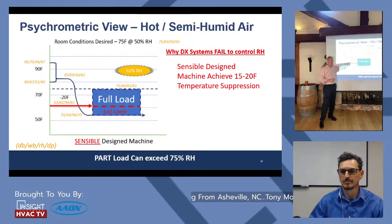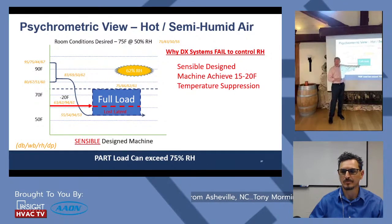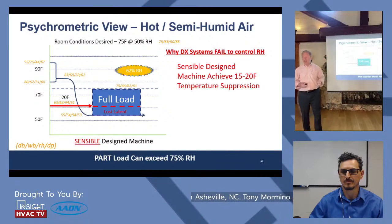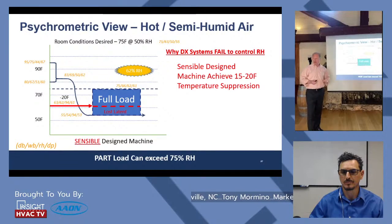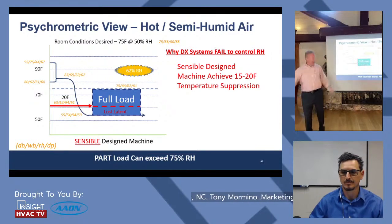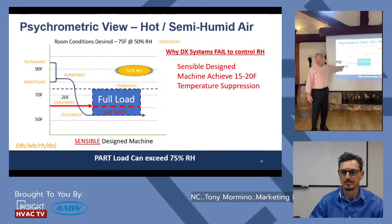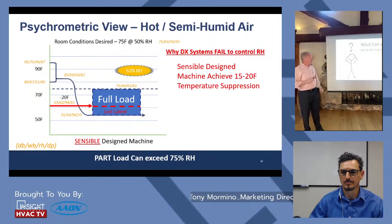A sensible design machine with a 20°F temperature suppression holding 94% RH leaving the coil ends up at a 61°F dew point — we've lost latent control. That machine wasn't equipped to handle all of that moisture removal. Many contractors have heard owners say 'I can't afford that machine, just put this one in' — and then they come back complaining they can't control humidity. That's exactly what we're dealing with.